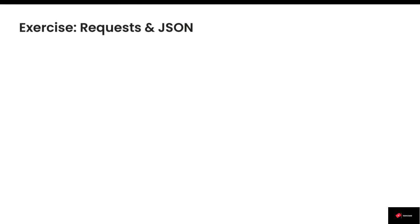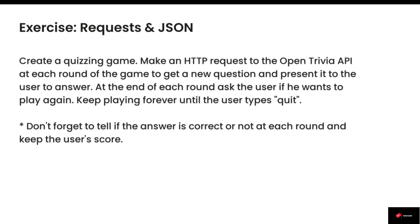Hi there! It's time to exercise what we just learned about the requests and the JSON module. Create a quizzing game. You should make an HTTP request to the Open Trivia API at each round to get a new question. At the end of each round, ask the user if he wants to play again and keep playing until he types quit. This is actually the coolest exercise in this course, so I hope you have fun and when you're done, come back here to see the solution.